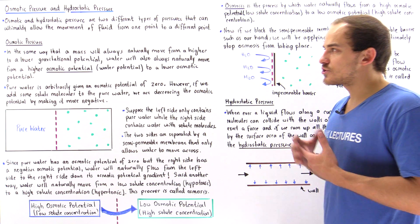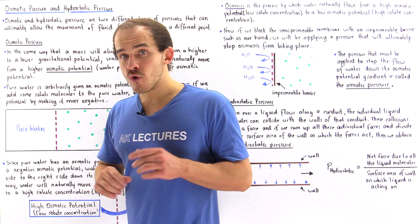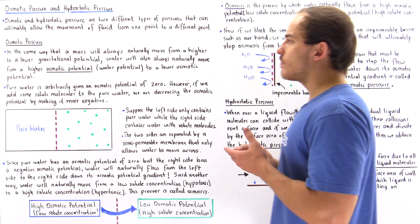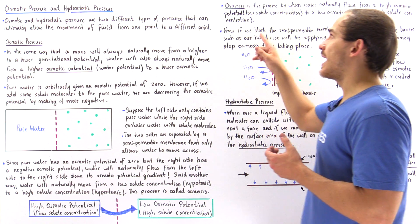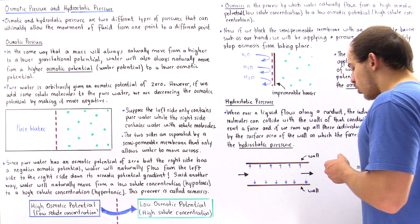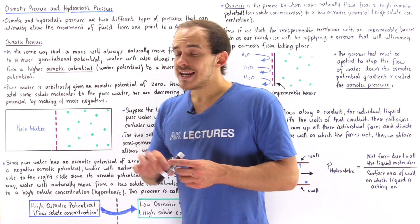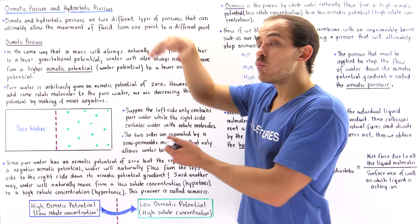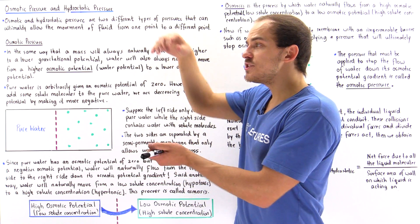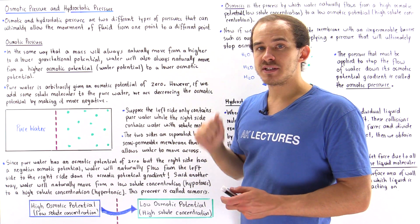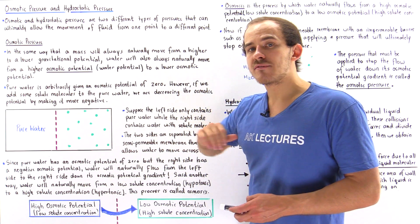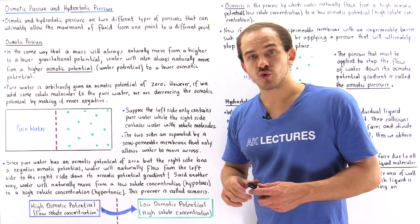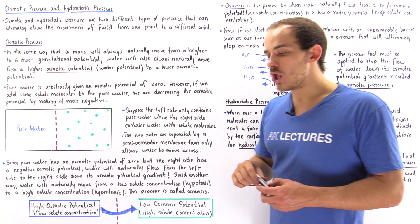Before we define osmotic pressure, we have to discuss osmotic potential and osmosis. If we take a mass, for example a marker, and let go, it will always move from a higher gravitational potential to a lower gravitational potential. Objects naturally move down their gravitational potential gradient from a high potential to a low potential.